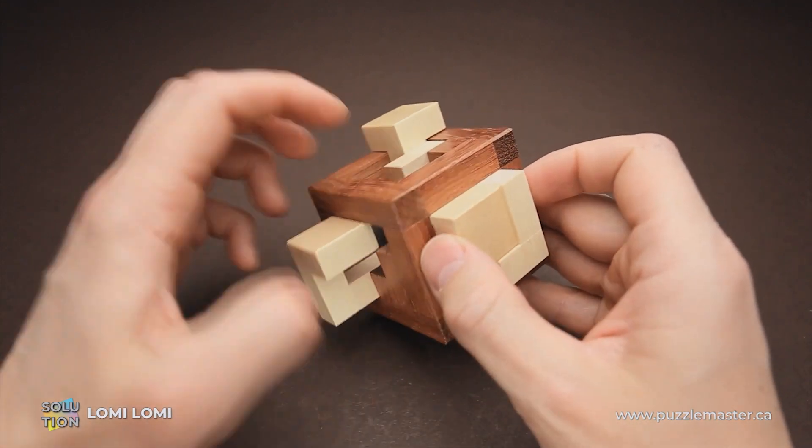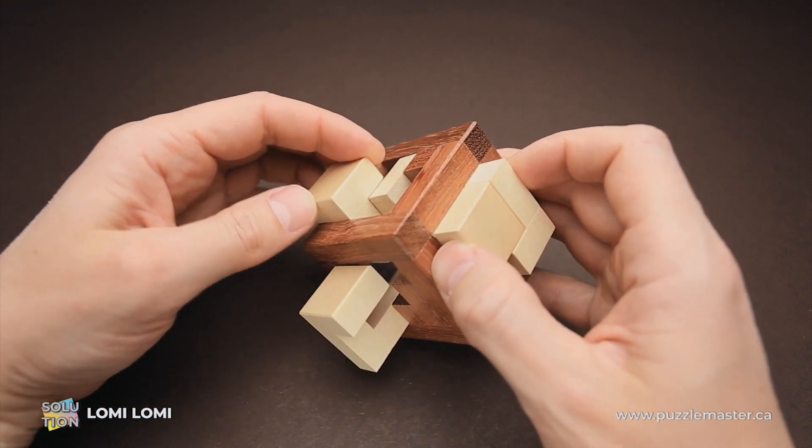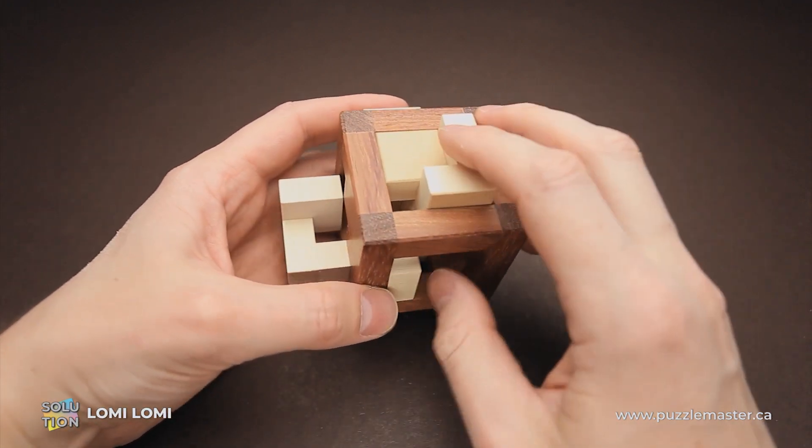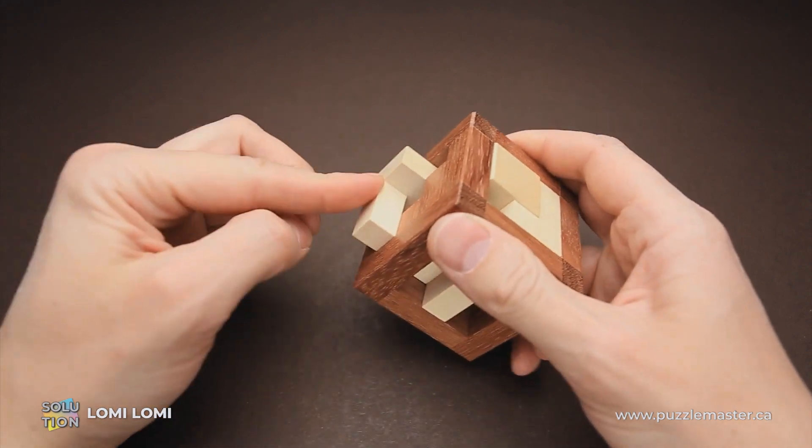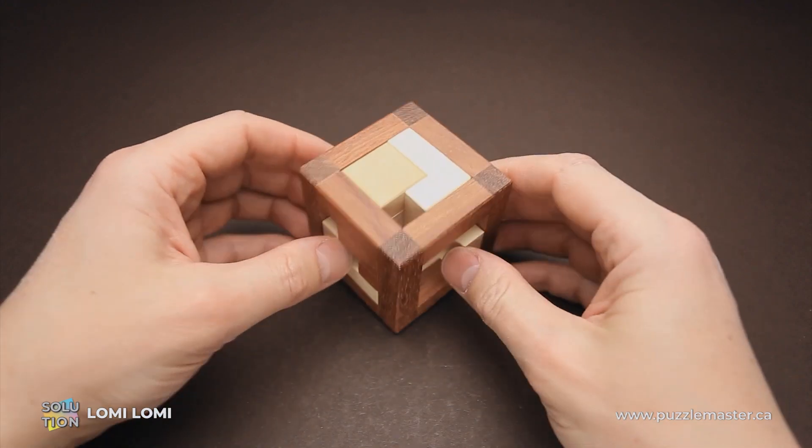The next step is to grab this part, move it all the way to the left, and up. Now you move this piece down and this piece goes down. You can push this piece inside and then this goes inside as well. And the puzzle is assembled.